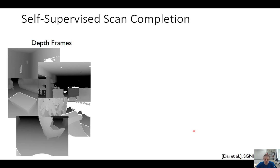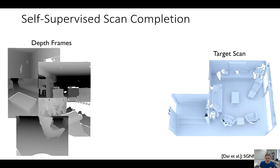The idea is you can do self-supervised scan completion. We take a set of depth frames as input from an RGBD scan, assuming we have the pose alignments from running a reconstruction method like BundleFusion. Taking all frames together and feeding them into a reconstruction method gives us a final mesh as output — the target scan. In that target scan, we still have the same problem of incomplete regions because we didn't see everything at the same time. The question is: can we use these scans to devise a self-supervised method that learns to complete beyond these kinds of incomplete targets?